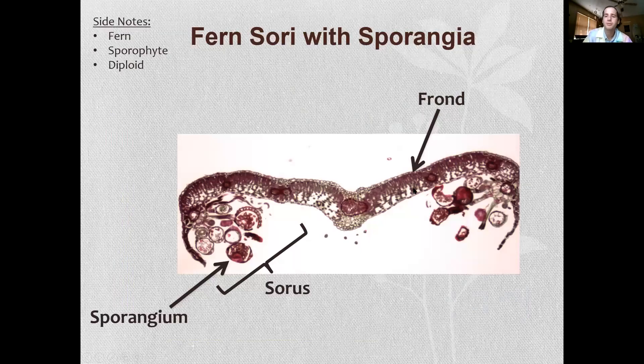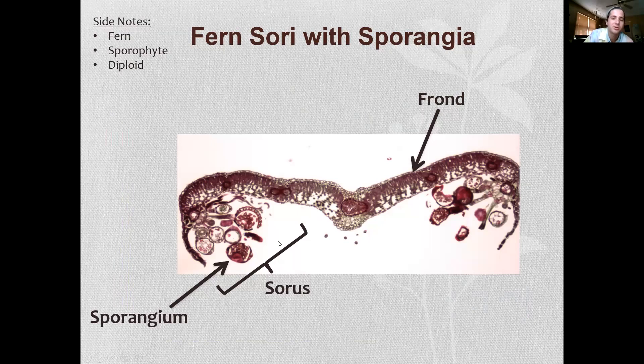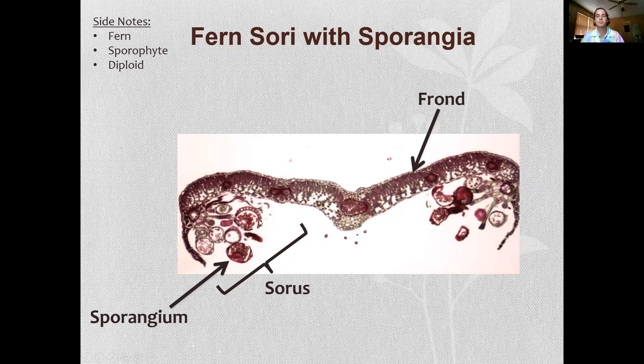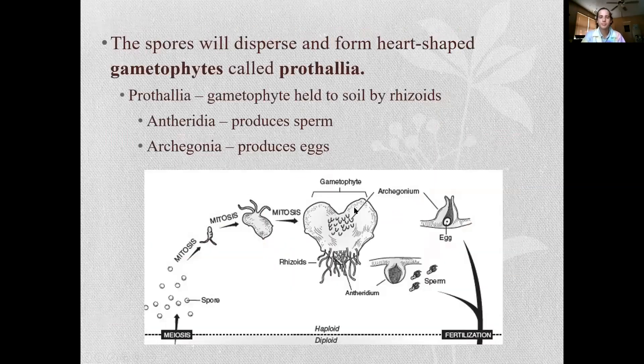This is a cross section of a frond. You can see on the underside this whole group of structures is the sorus. And one of these balls on the end of one of these stalks is a sporangium. On the inside they are full of spores.